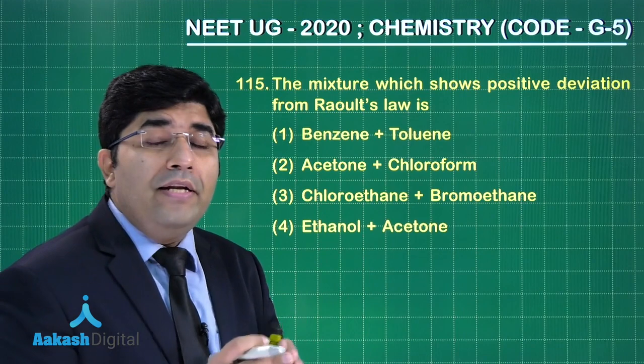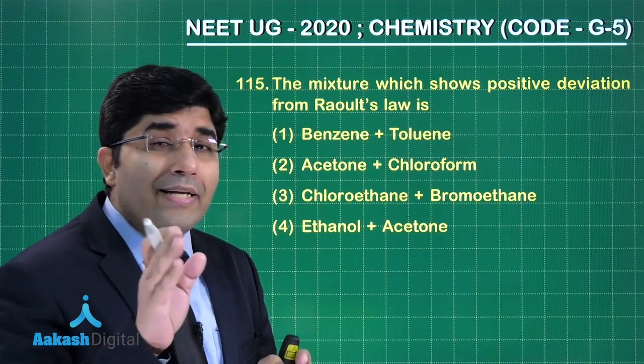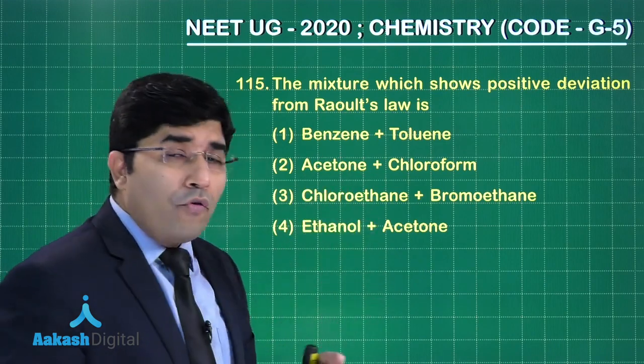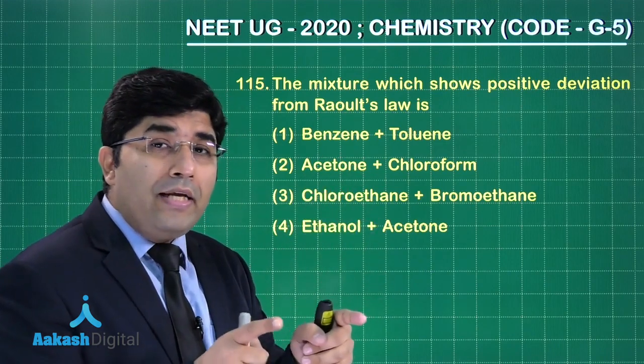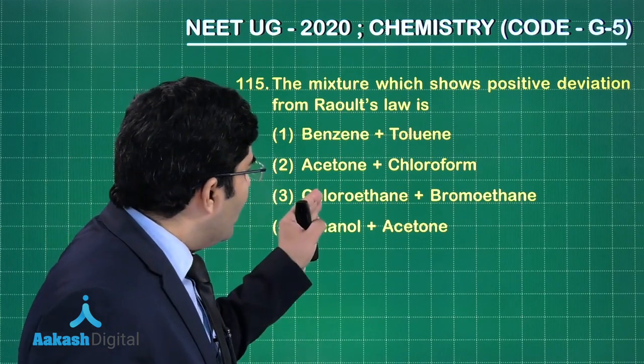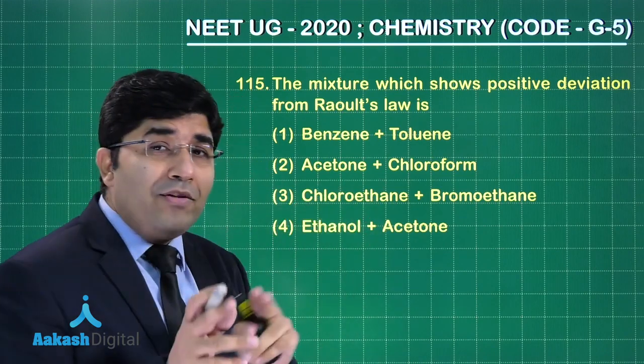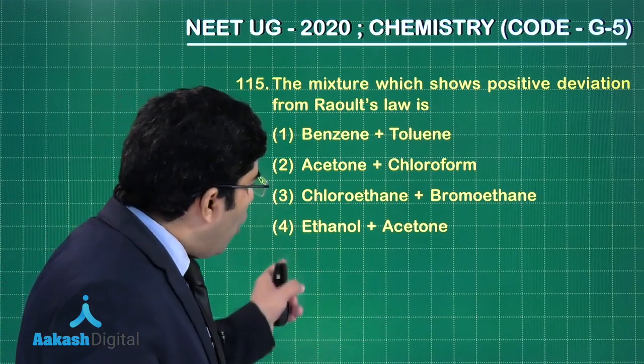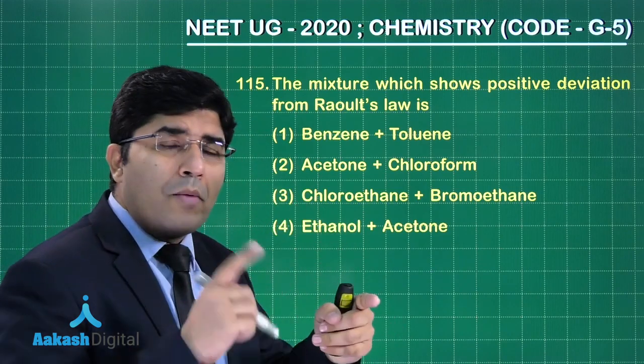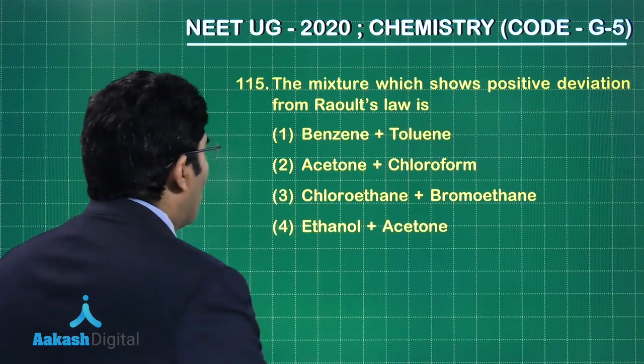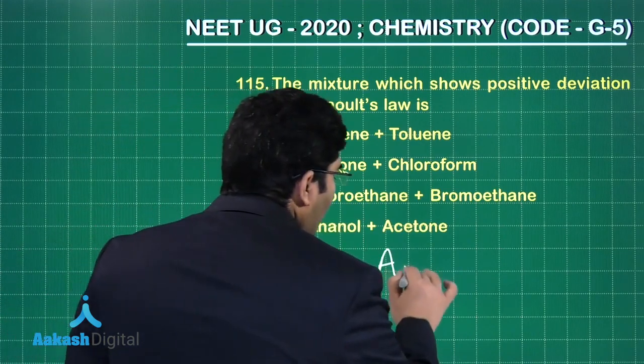Acetone and chloroform as per the NCERT they will show the negative deviation. Third one chloroethane and bromoethane they will show the ideal behavior. Ethanol and acetone they will show the positive deviation from Raoult's law. So fourth is the correct answer.